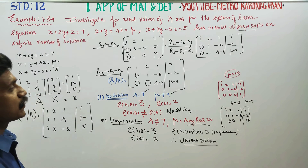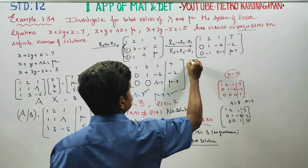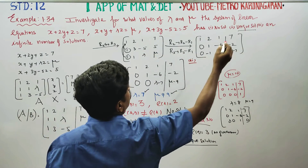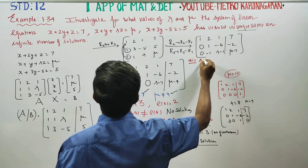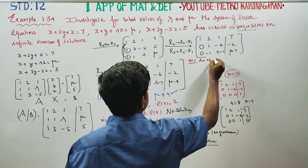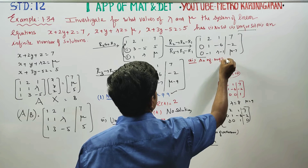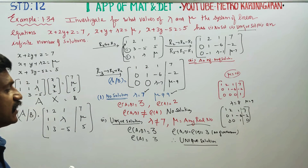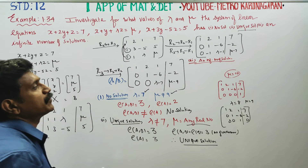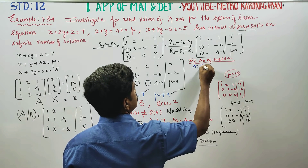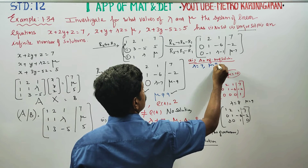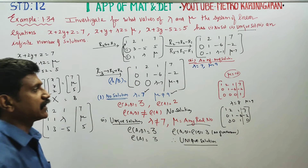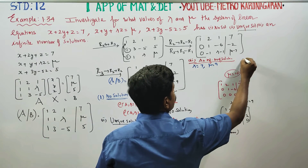Now third case: infinite number of solutions. What values do we need? We need to look at the values. Lambda is equal to 7 and mu is equal to 9. If we substitute these values in, we get a specific reduced matrix.